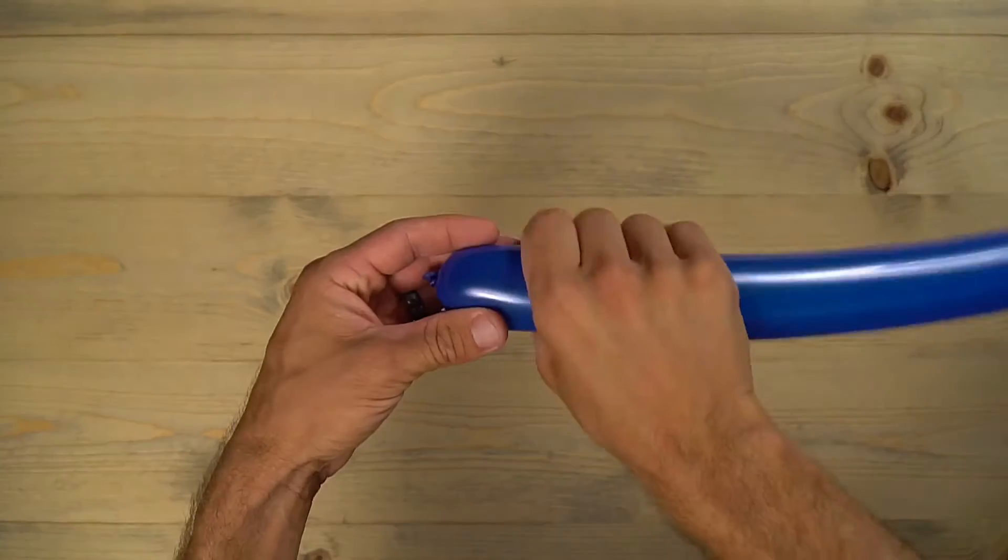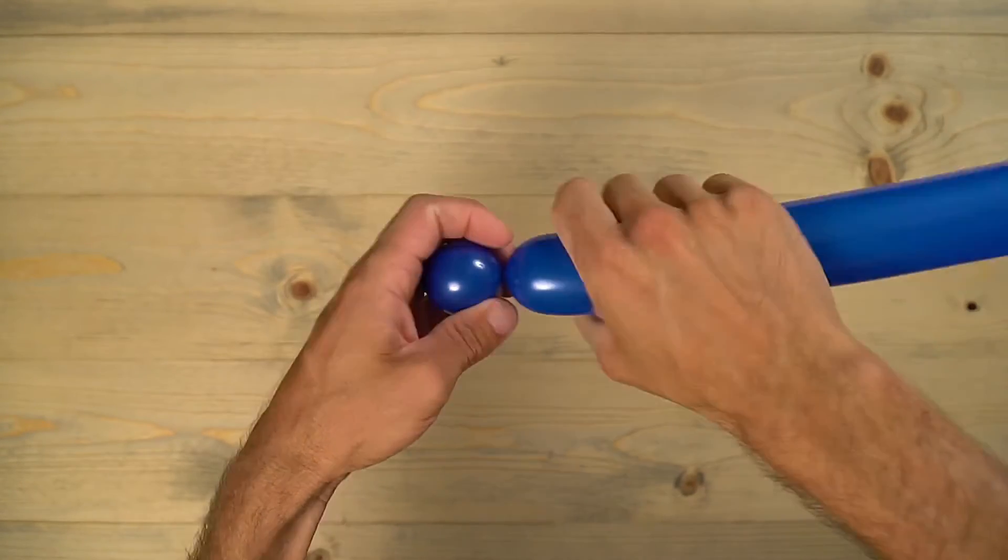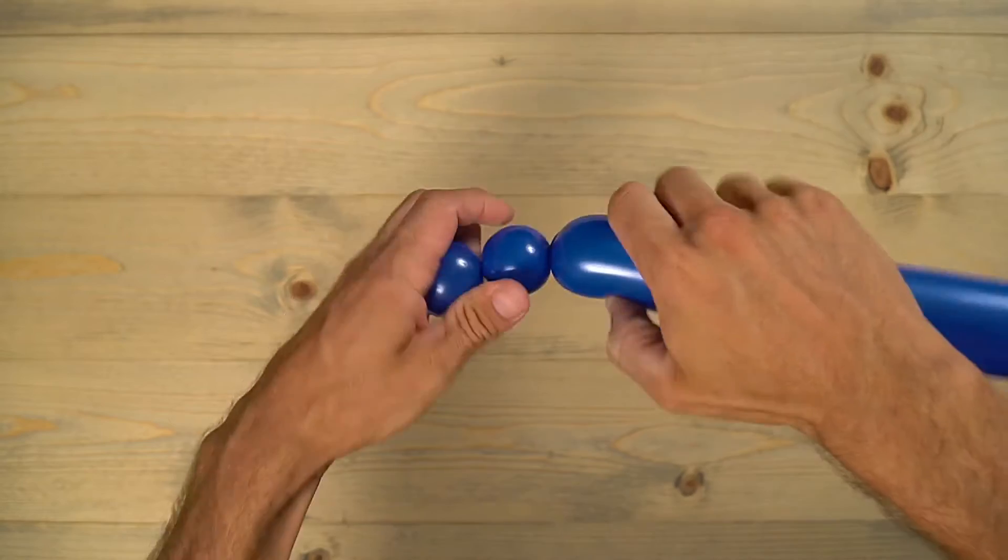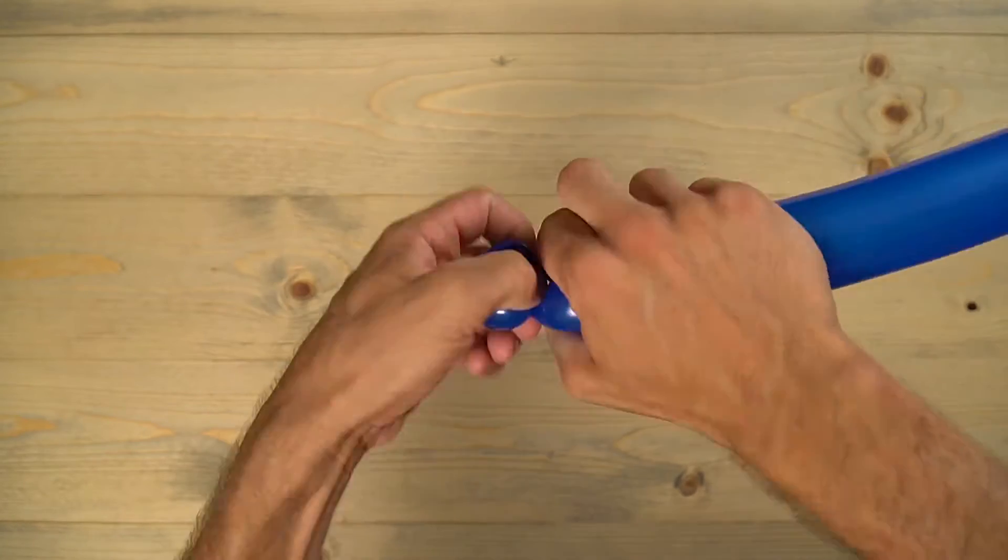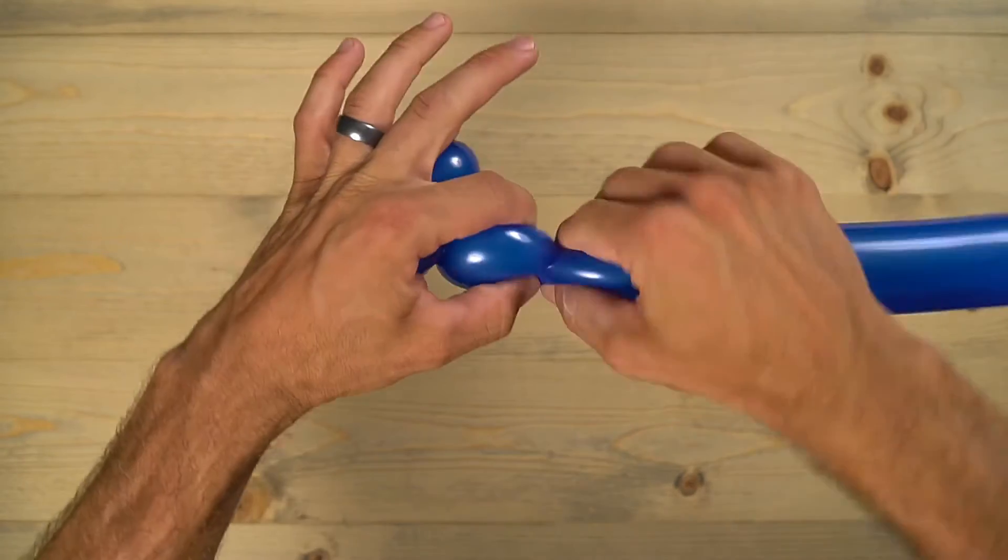Start with either the blue or red and do a one inch bubble. Make another one about the same size or smaller. Pinch twist that. Then make a one and a half to two inch bubble there, probably about one and a half.